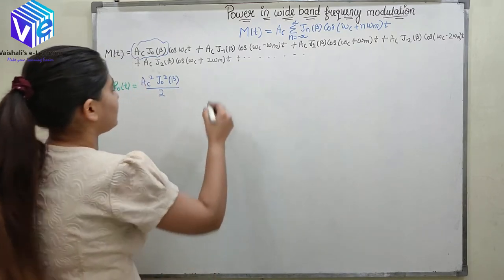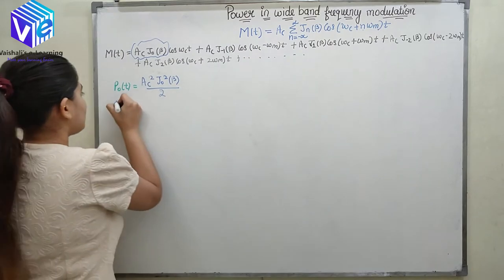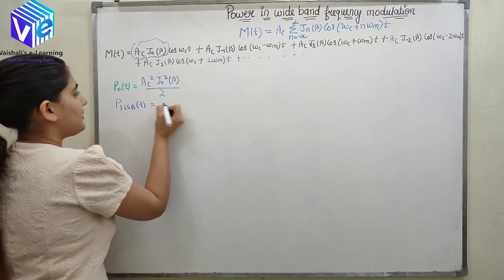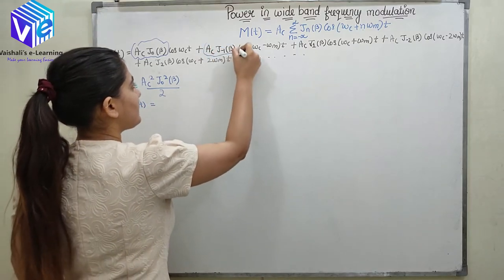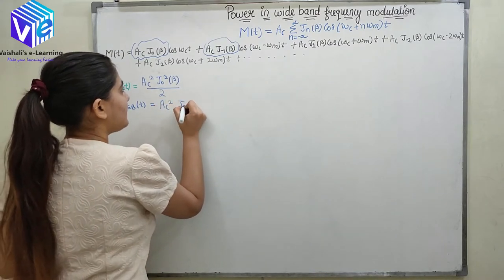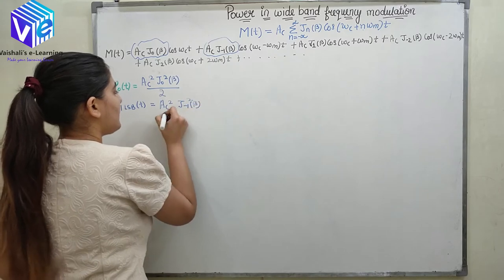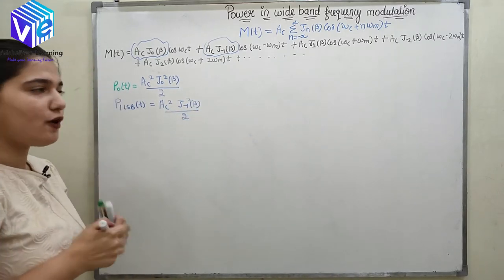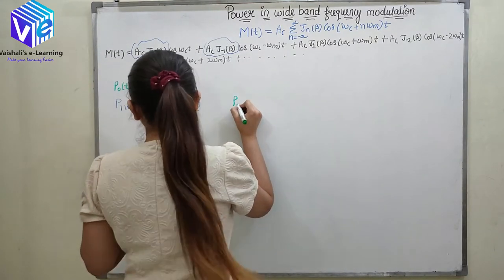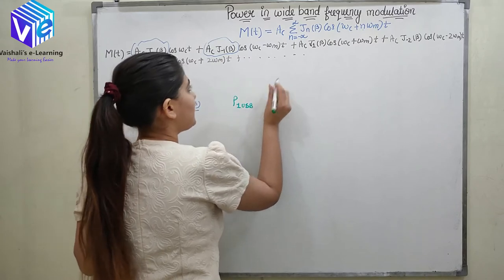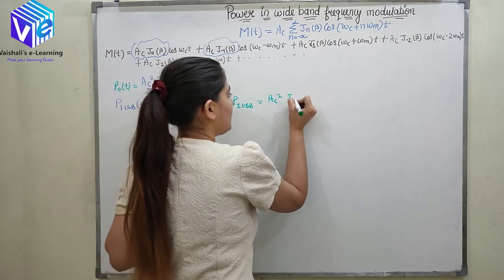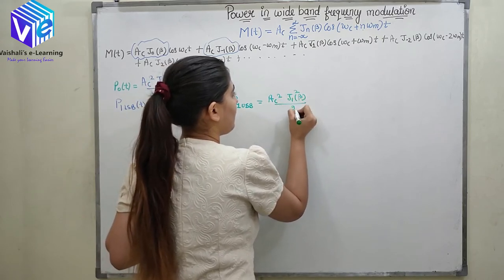Now if I talk about the first lower sideband: the power of the first lower sideband equals AC²·J₋₁²(β) / 2. Similarly, the power of the first upper sideband — represented by the corresponding term — equals AC²·J1²(β) / 2.